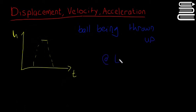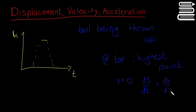I'm going to say at top, which is the highest point. This is important, it'll come up. At the highest point, V is equal to zero or ds dt or dh dt is equal to zero.